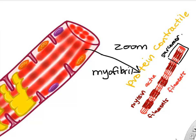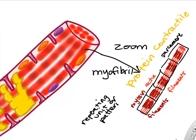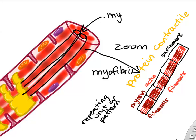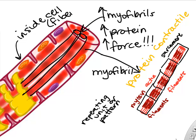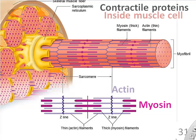Each little unit of the myofibril is called the sarcomere — just a repeating pattern. You'd have hundreds or maybe thousands of myofibrils packed inside each myocyte. The more myofibrils you have, the stronger and bigger your muscle will be, and the more force it will generate. When you work out, you'll develop more myofibrils and a stronger muscle.